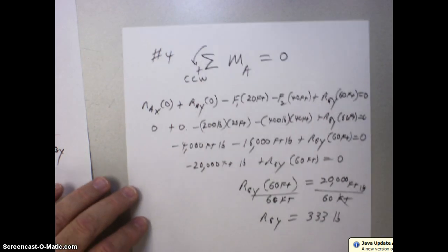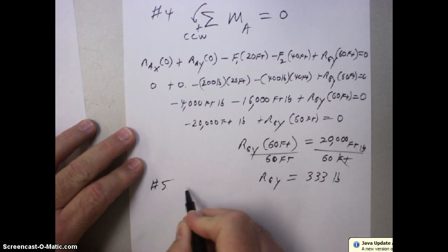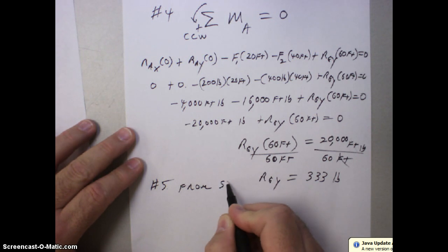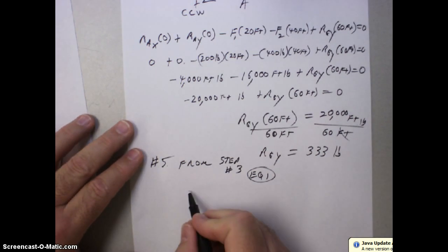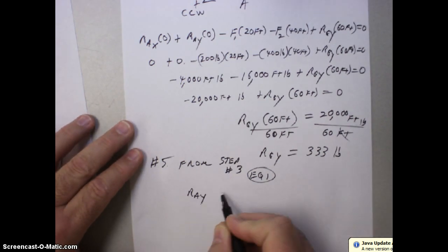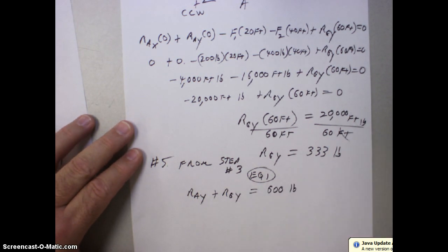Now, our last step here is number 5 is from step number 3, equation 1. So at equation 1, remember it was RAY plus RGY was equal to 600 pounds. Everything going up has to keep everything going down the way of forces.